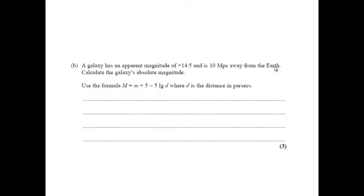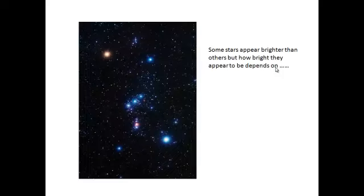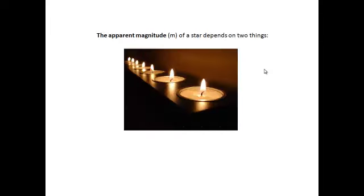So we'll start by looking at what some of these terms in the equation mean. Now some stars appear brighter than others. This is a constellation of Orion and just looking in there we see some very bright stars and some stars which are a lot dimmer. However, how bright they appear depends on the apparent magnitude, which is how bright a star appears to be, and that has the symbol little m, and it depends on two things: how bright the star actually is and how far away it is. A very bright star may appear very dim if it's very far away and a much dimmer star may appear very bright if it's closer to us.